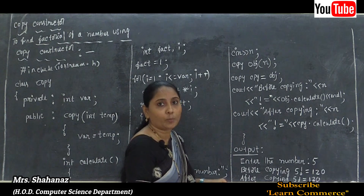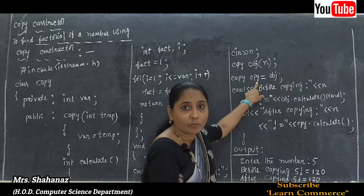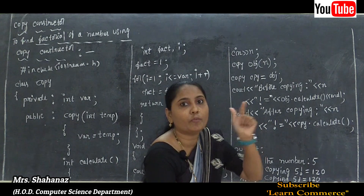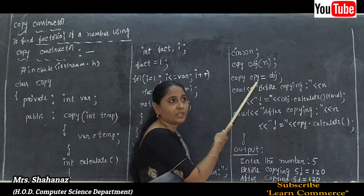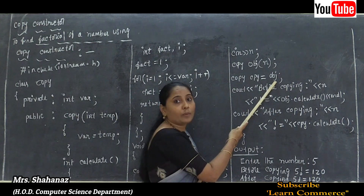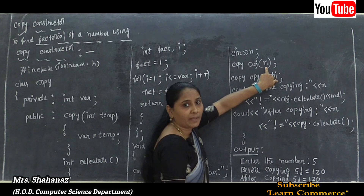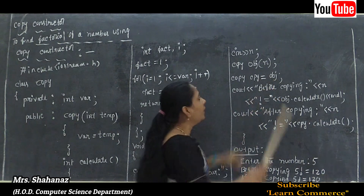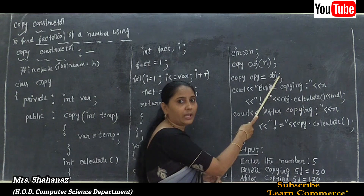In the second line, we declare a second object named 'cpy' and copy from the first object using an assignment: copy cpy = obj. Note that when copying an object this way, we do not need to use parentheses again. The assignment operator handles copying from one object to another without parentheses.